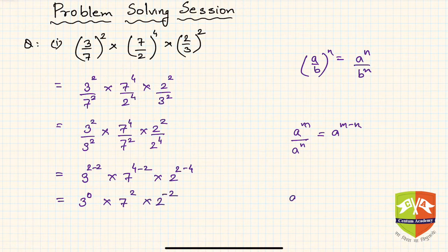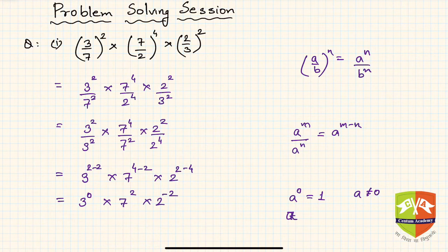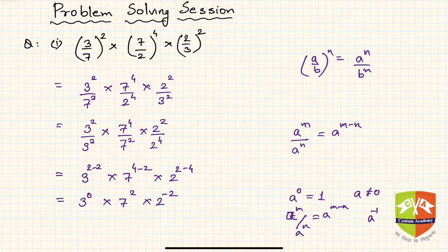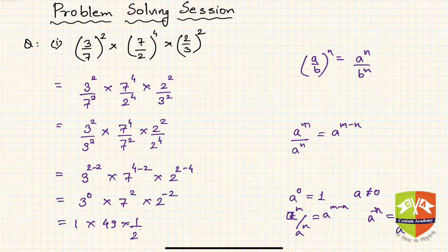Now we use the law that a⁰ = 1 (where a ≠ 0), so 3⁰ = 1. We also use a⁻ⁿ = 1/aⁿ. So this becomes 1 × 49 × (1/4), which is nothing but 49/4. We leave it in fraction form. That is the first example.